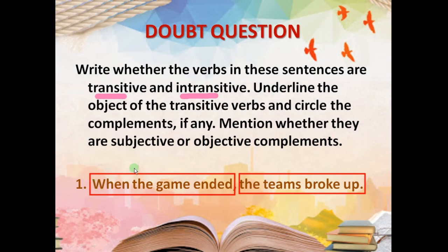If you remember, this first clause — 'when the game ended' — is our subordinate clause, and 'the teams broke up' is our main clause. Whenever a comma is given, you have to keep in mind that the sentence has ended there. So in the sentence 'when the game ended,' the verb is 'ended.' After that, nothing is given — you will not say 'the teams.' That is our different sentence.